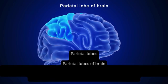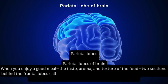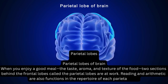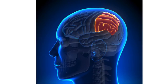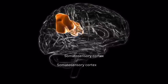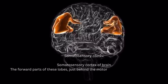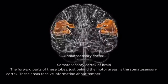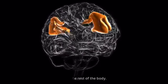Parietal Lobes. When you enjoy a good meal — the taste, aroma, and texture of the food — two sections behind the frontal lobes called the parietal lobes are at work. Reading and arithmetic are also functions in the repertoire of each parietal lobe. The forward parts of these lobes, just behind the motor areas, is the somatosensory cortex. These areas receive information about temperature, taste, touch, and movement from the rest of the body.